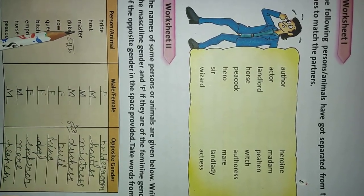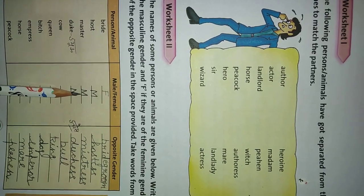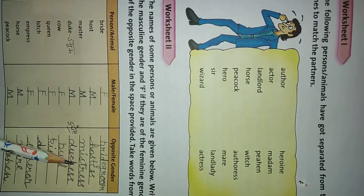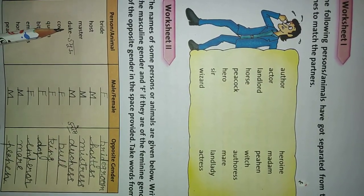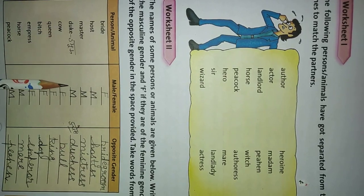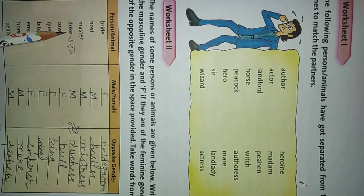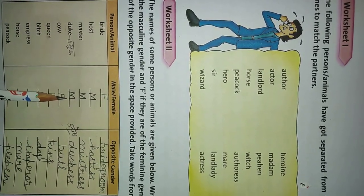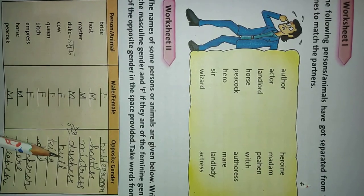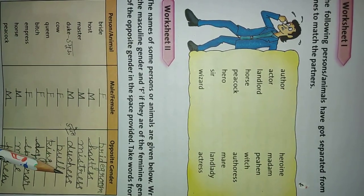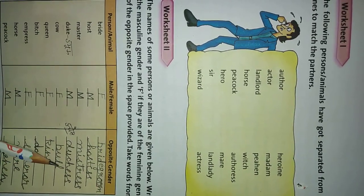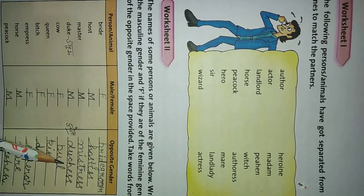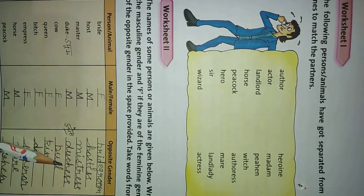The third is Master — it is male, and the opposite gender is Mistress. The fourth is Duke — Duke means a ruler. It is male, and Duchess is its opposite gender, meaning a female ruler. So the fourth answer is Duchess.